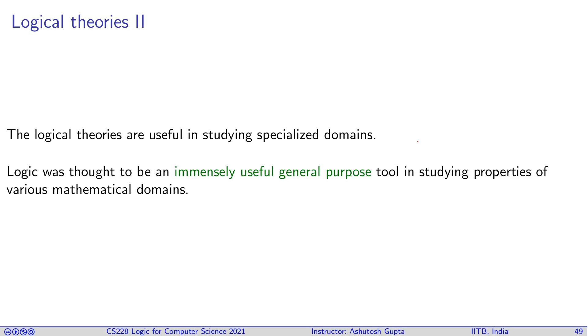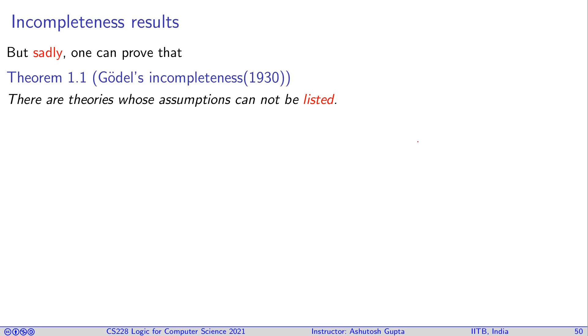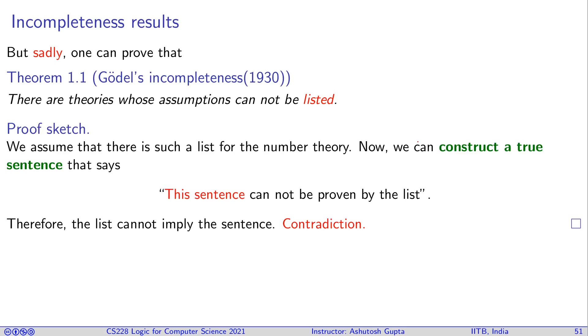However, it turns out you can prove a theorem like this, which is proven by Gödel in 1930, which says that there are theories whose assumptions cannot be listed. So there is a subject matter out there, you cannot come up with a list which exactly describes what the matter is. And that theory happens to be the number theory. Number theory means plus, multiplication and all the natural symbols and greater than, less than signs, then you can say that this exact set of assumptions of this theory cannot be listed.